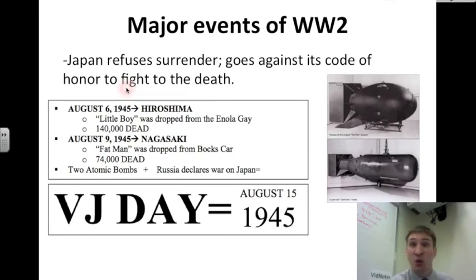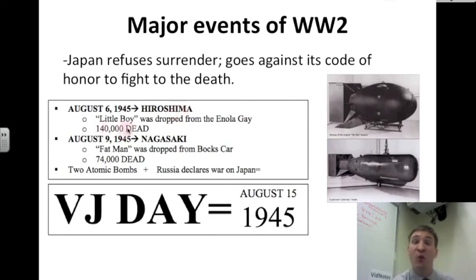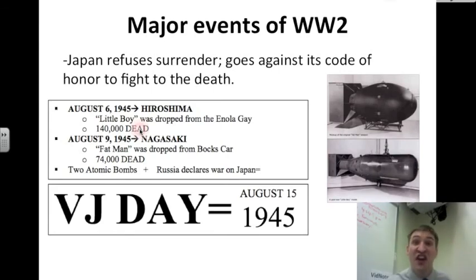So the Japanese don't surrender. On August 6th, 1945, Little Boy — this atomic bomb — is dropped from a plane called the Enola Gay onto the Japanese city of Hiroshima. 140,000 Japanese die. Some die instantly — they're vaporized and vanish into thin air. But Japan still does not surrender.